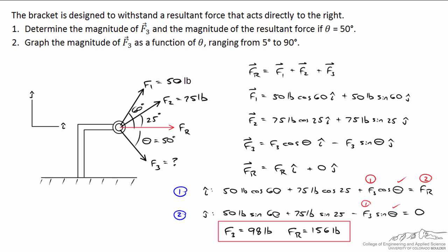Here's a solution for the first part. We found the magnitude of F3 and the magnitude of the resultant force. This means physically, if we consider the material in the bracket itself, if we do not include the material in the ring, it means that we could get rid of, as far as the bracket is concerned, all three of these ropes, and we would replace it with one rope acting to the right, directly to the right, with a force of 156 pounds. As far as the bracket is concerned, these two loadings are equivalent.